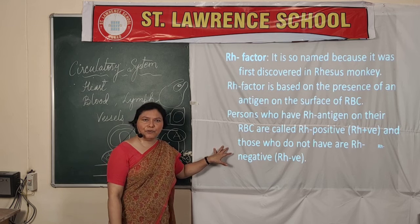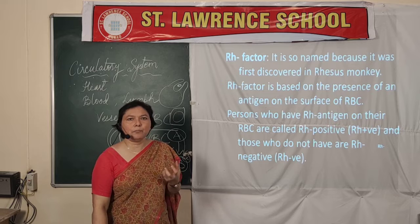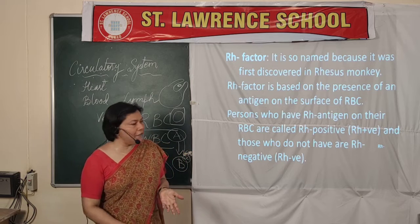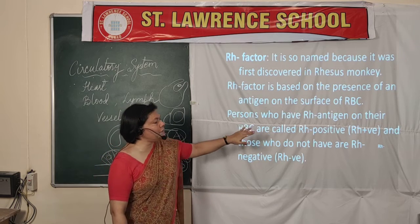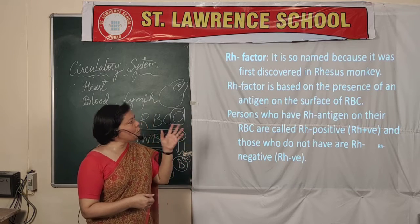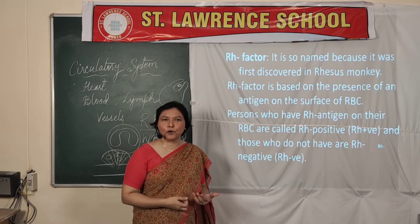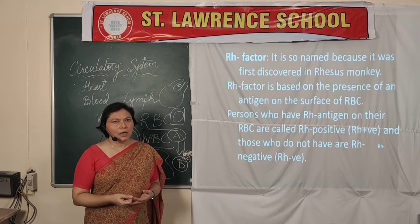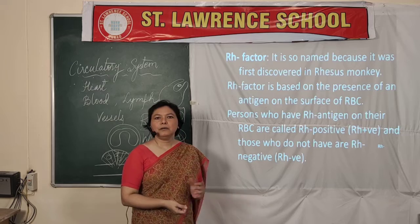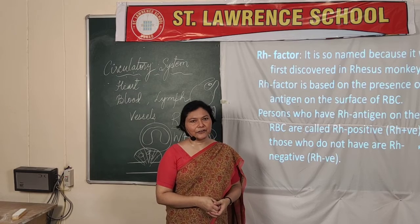According to blood group study, there is another type called the RH factor. If it is present in the blood, it is called RH positive; if absent, it is called RH negative. This was first studied in a rhesus monkey. There are many more things to study from blood groups and RH factors, which we will do in the next session. I hope you have enjoyed the first part of the chapter and we will continue in the coming sessions. Thank you and have a nice day.